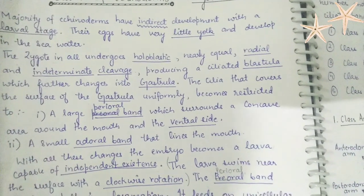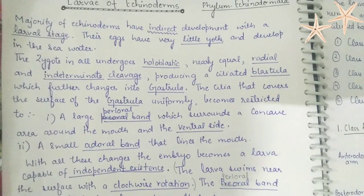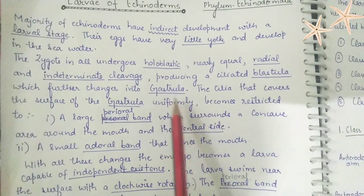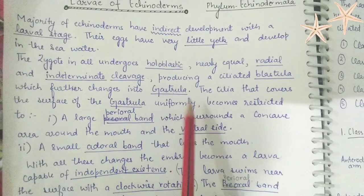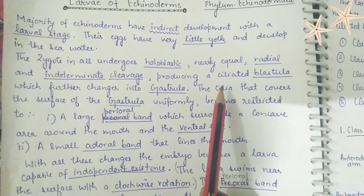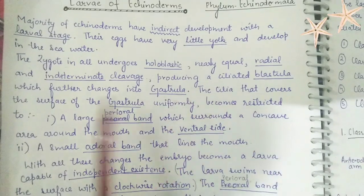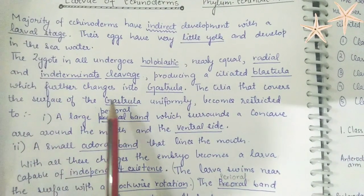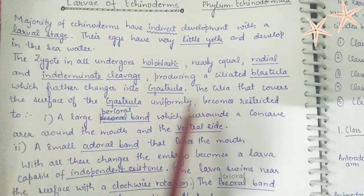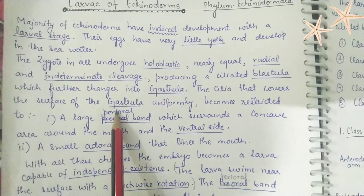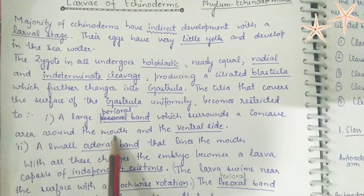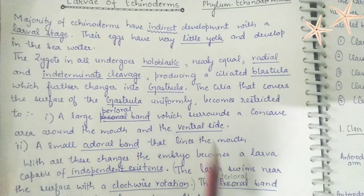The blastula further changes into the gastrula. The surface of the gastrula is also covered with cilia. The cilia that covers the surface of the gastrula uniformly become restricted to a large perioral band which surrounds a concave area near the mouth and the ventral side.